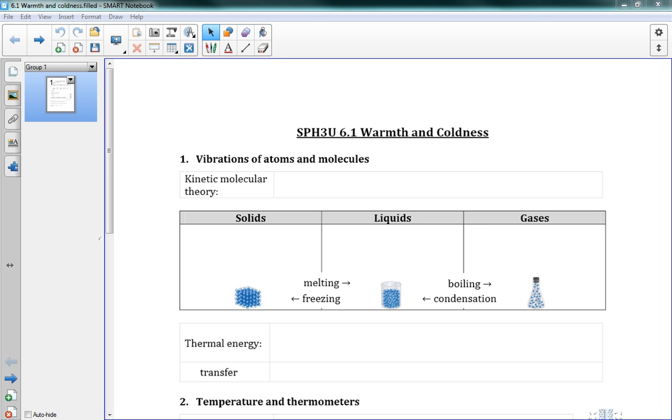Hello class, welcome to 6.1 Warmth and Coldness. So we're starting our new chapter here. Chapter 5 was all about energy and power. Chapter 6 is about a specific type of energy. We're talking about thermal energy now, which is all about heat. This first lesson is Warmth and Coldness, and it's mostly review of what you've learned in science class and in chemistry class.